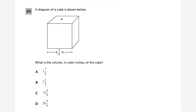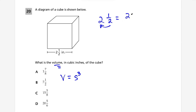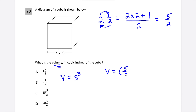Question 20: we want the volume of a cube in cubic inches. The formula is V = s³. We take the side length two and a half inches and raise it to the third power. First, convert two and a half to an improper fraction: 2 times 2 plus 1 is 5, over 2. So the volume equals (5/2)³.